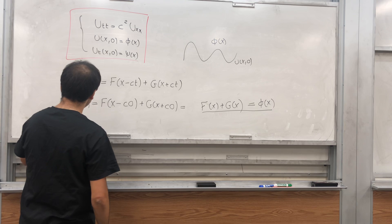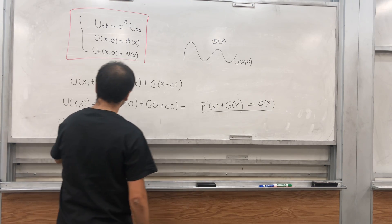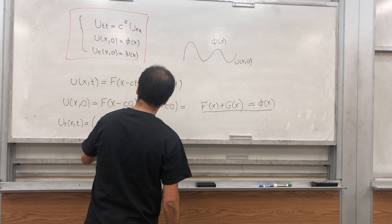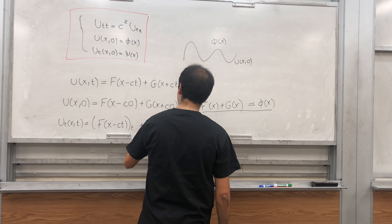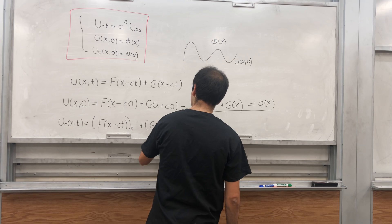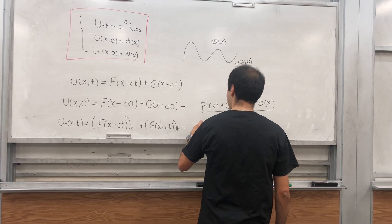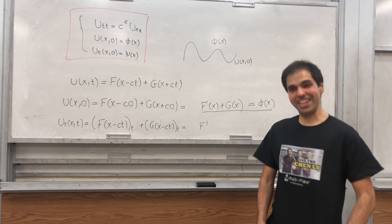So u_t(x,t), that's F of x minus ct with respect to T, plus G of x minus ct with respect to T.